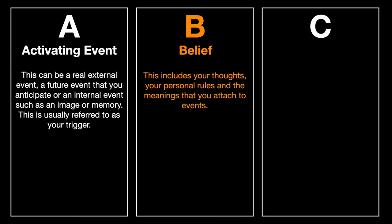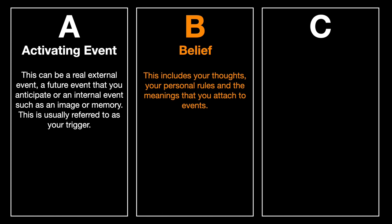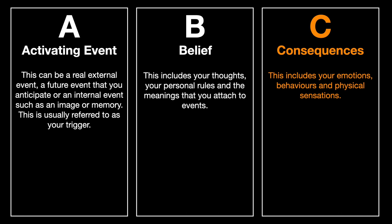B is your beliefs about the event. This also includes thoughts, your personal rules, and the meanings that you attach to events. C is the consequences. This includes your emotions, behaviours, and physical sensations.